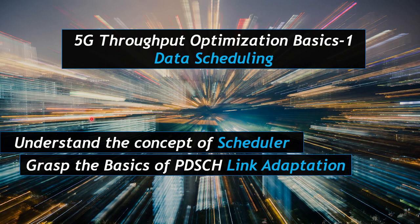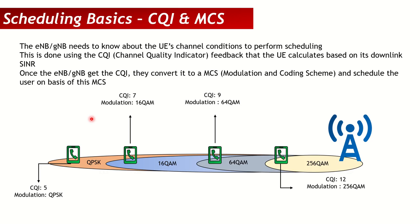Today we're going to talk about some concepts. I've been getting comments and questions about topics I'd like to cover separately, as they are basics and concepts oriented. One of them is 5G throughput optimization basics — questions about the scheduler, data scheduling, control scheduling, and how block error rate comes into play. So I'll do a few short sessions covering these topics. The first one, the building block of all scheduler algorithms, is the data scheduling part. The most important basics for any scheduler algorithm are the CQI and the MCS.